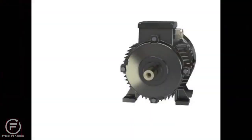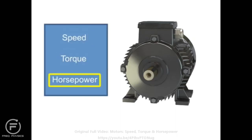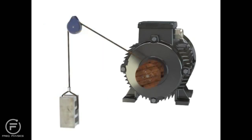The three factors that determine the type of work a motor can produce are speed, torque, and horsepower. Speed is defined as how fast the motor performs its work — for example, a shaft can rotate slowly or quickly. The typical units of measurement for rotational motor speed are revolutions per minute, or RPM.